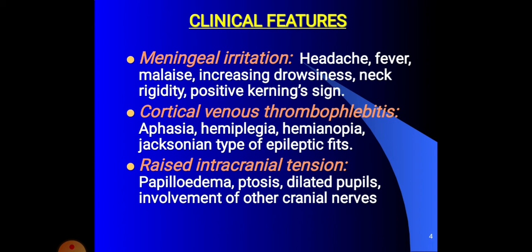The Kernig's sign is that when we extend the leg when the thigh is flexed, this causes pain and the Kernig's sign is positive. Cortical venous thrombophlebitis, aphasia, hemiplegia, hemianopia, and Jacksonian type of epileptic fits are also seen in subdural abscess.